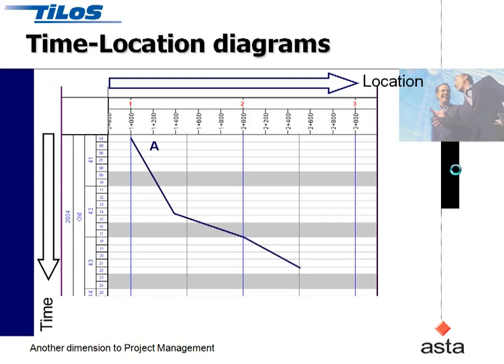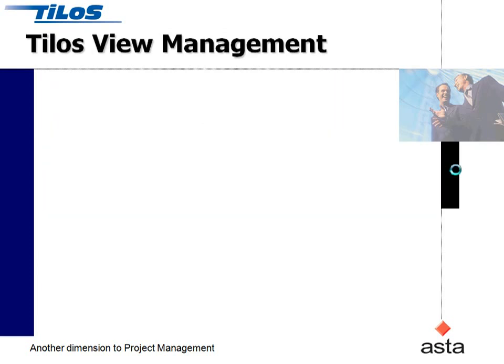With Tylos, we can switch those axes around. If we then plot the same activities, we've got activity A and there's a change of production there as it gets slower. And then when activity B is encountered, only on the time-distance diagram can you see the fact that there's a clash where these two items are operating in the same place at the same time. This is a situation you can avoid and plan out by planning in a time-location manner.